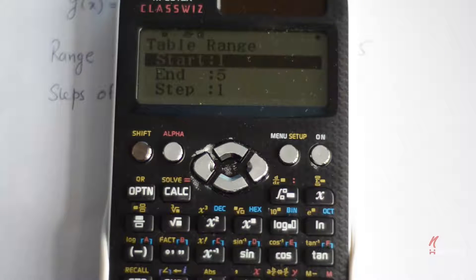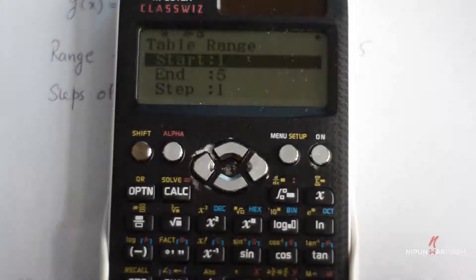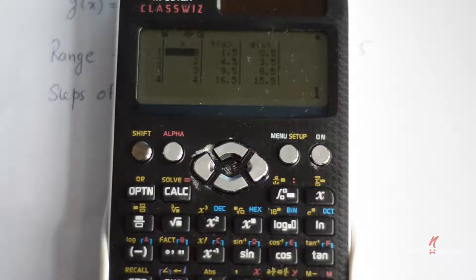Now it will ask you to put in the values for the table range. I will say my start point is 1, the end point is 5 and the step I need to take is one incremental step. So I will say okay, equal gives me the table.